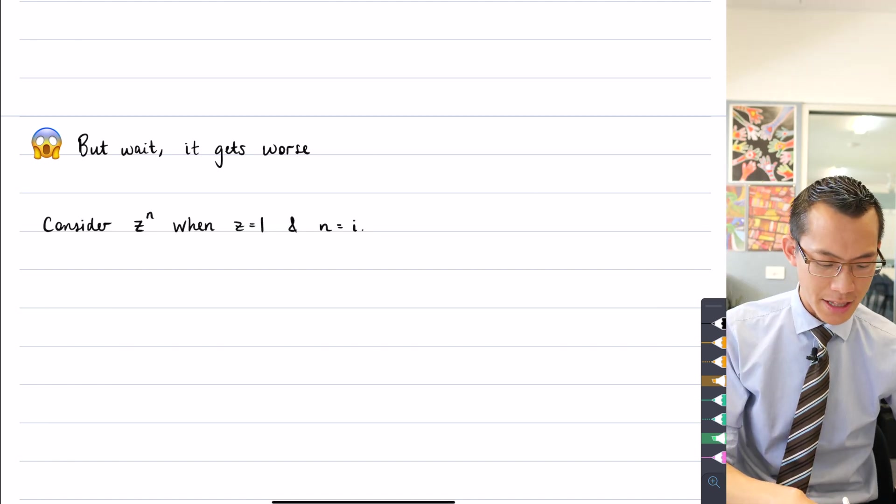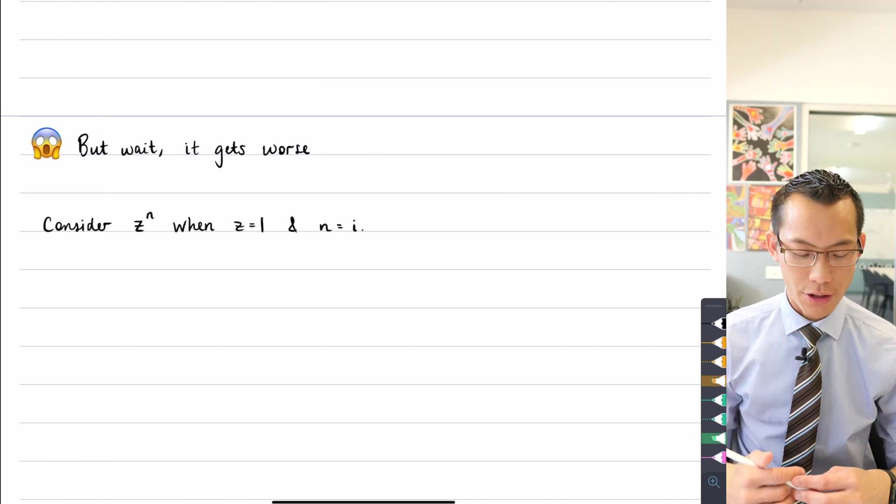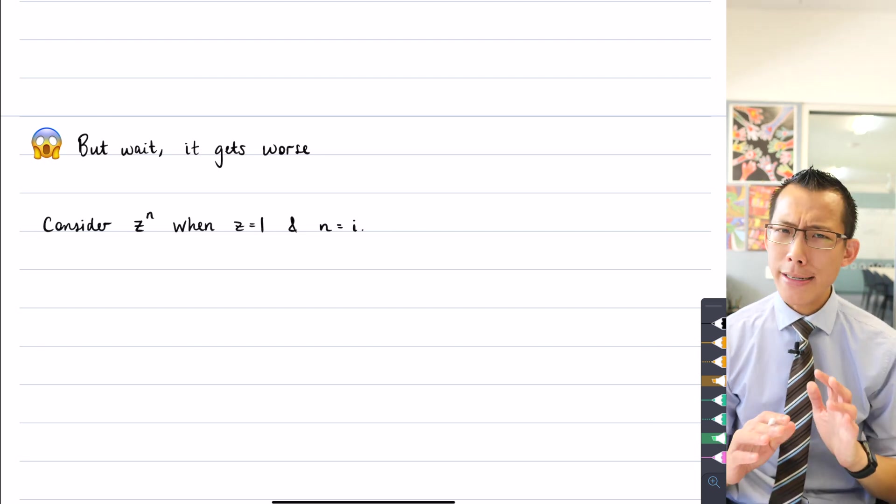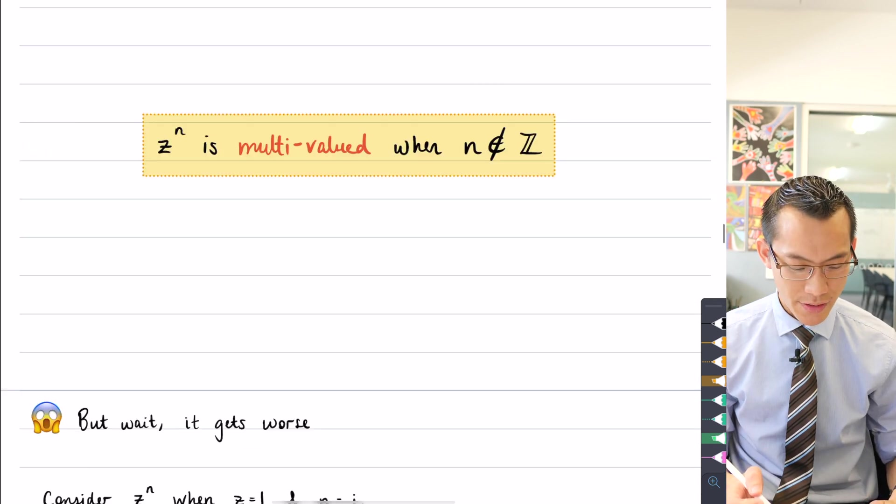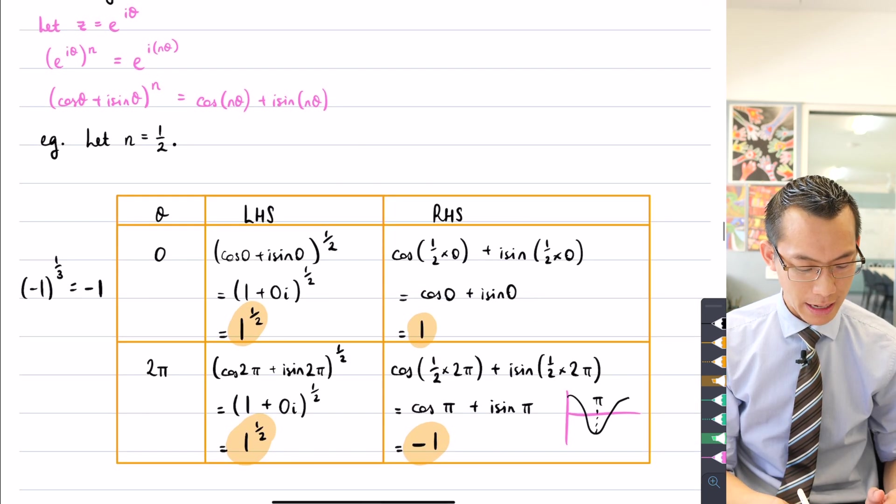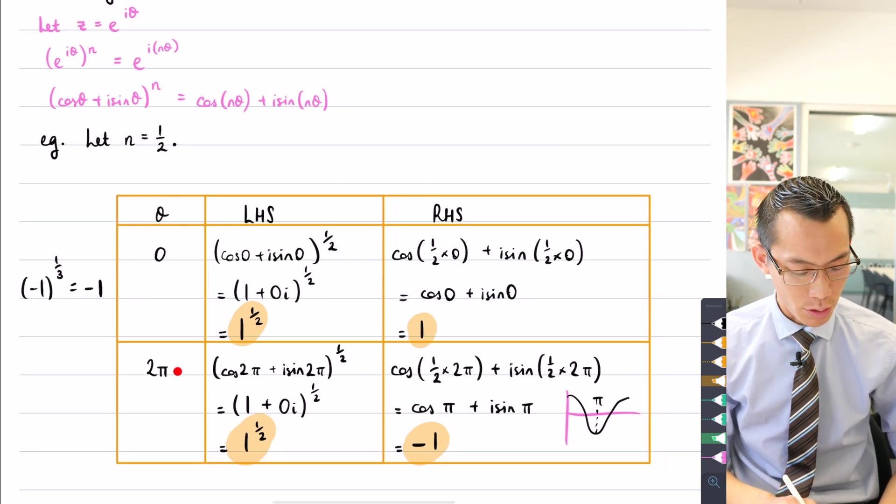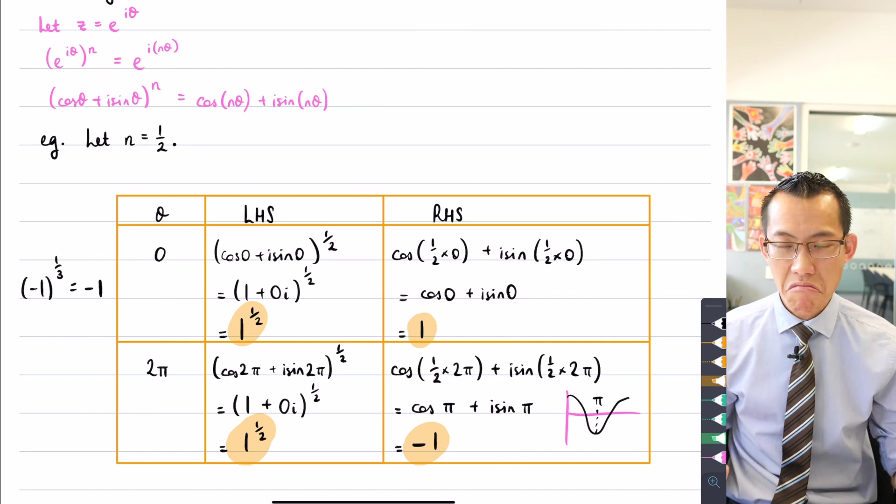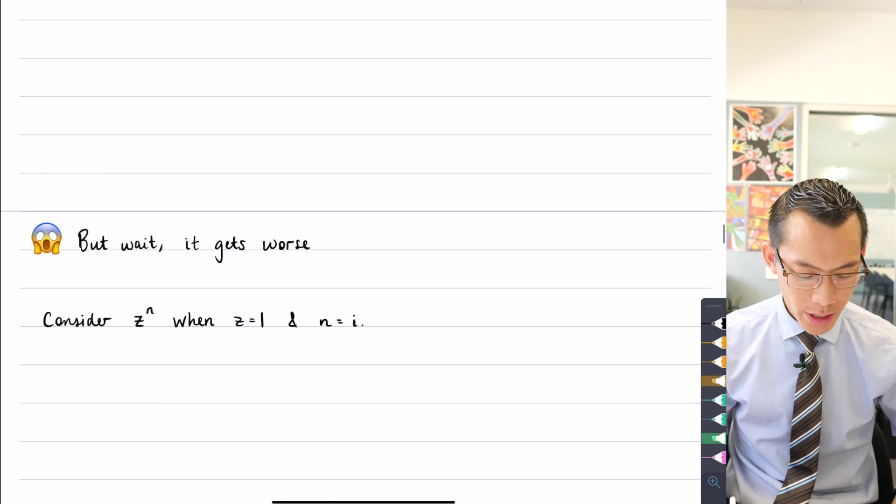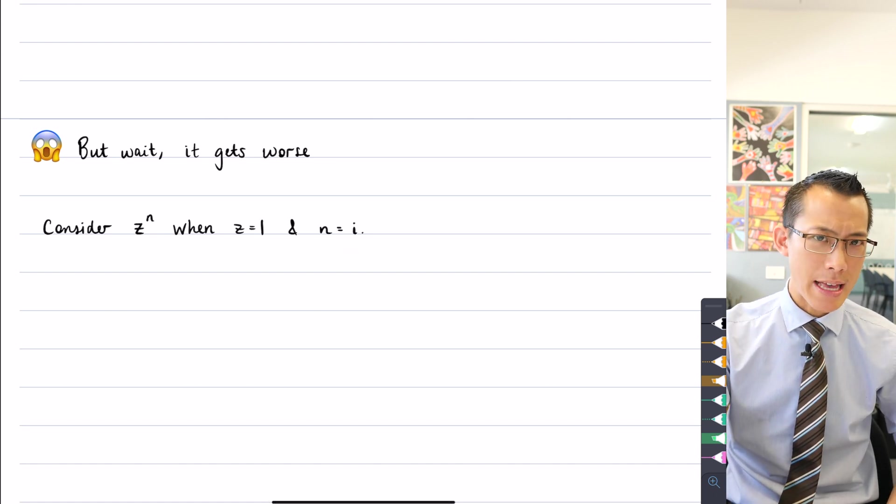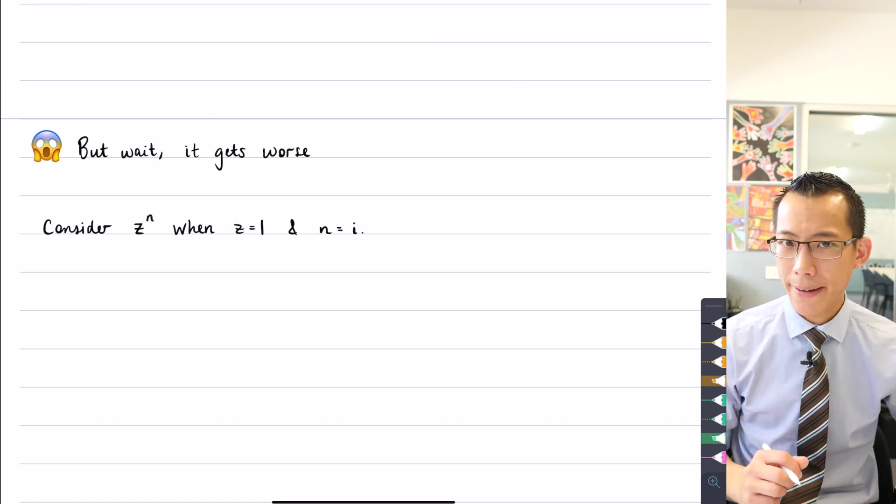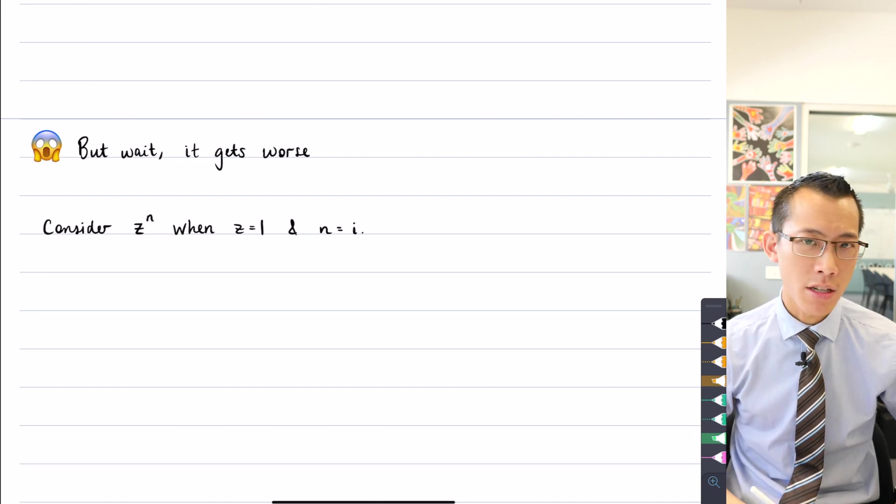Let's just consider this z to the n which we're saying is multivalued. Let's consider it for something really pedestrian like z equals one, which is kind of analogous to what I was doing before here. Like a theta value of zero or a theta value of two pi on the unit circle, that's z equals one. So we're going to choose z equals one and then we're going to think about what happens if we raise that to the power of i. What is one to the power of i?